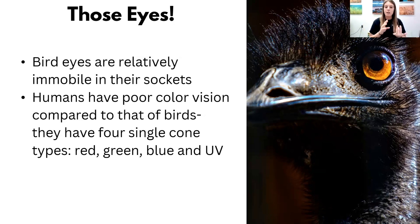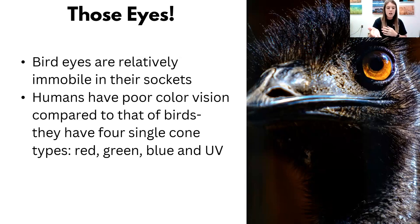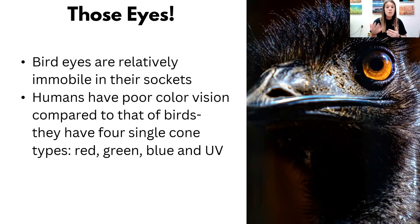Raptors especially need to be able to move their head to see in all different directions. Birds also have more types of cones and more of them too. They also have a special oil droplet in their eyes that allows them to see even more different colors. Birds also have more types of cones — and that oil droplet in their eyes gives them the ability to see a wider range of colors beyond what humans can perceive.